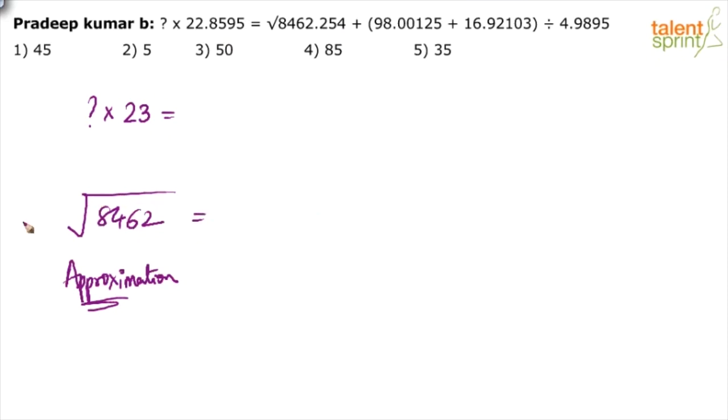I'm sure you have gone through the video on approximations where we discussed how to find out approximate square roots. The nearest square that I know here is 8100, which is 90 squared. So as per the technique, we will take 90 plus 362 divided by 2 times 90. This is the method that can be used to find out approximate square roots. 362 by 180 is approximately 2. So 90 plus 2, 92.